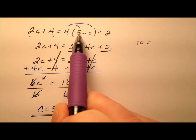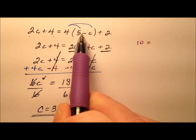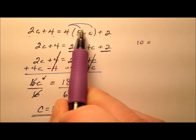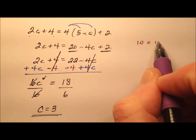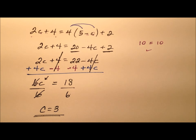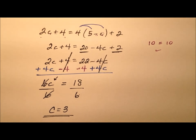So looking at this right side, 5 minus c. So 5 minus 3 is 2, and 4 times 2 is 8. 8 plus 2 is 10. So yeah, we see that that works out just fine.